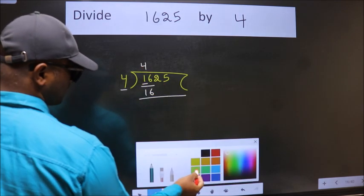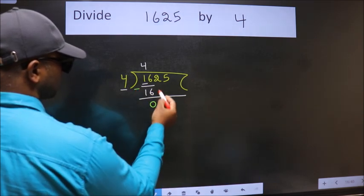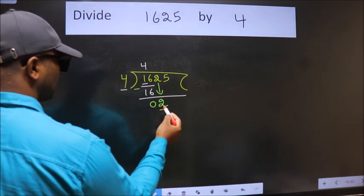Now we should subtract. We get 0. After this, bring down the beside number, so 2 down. Now here we have 2.